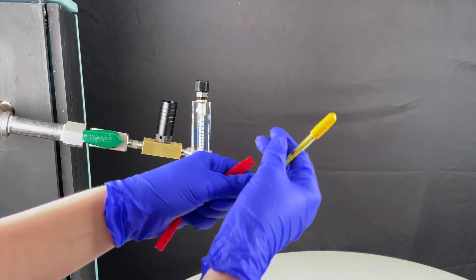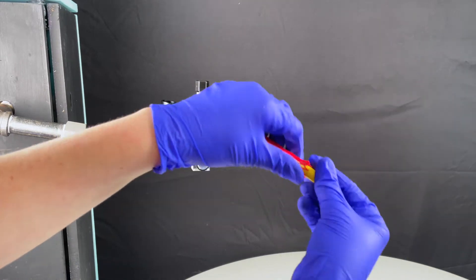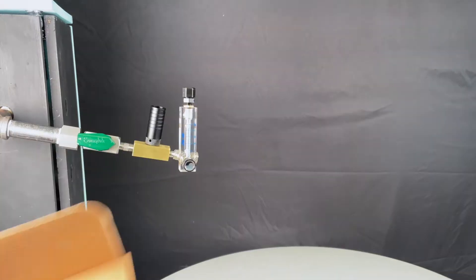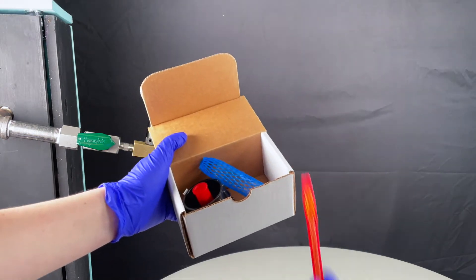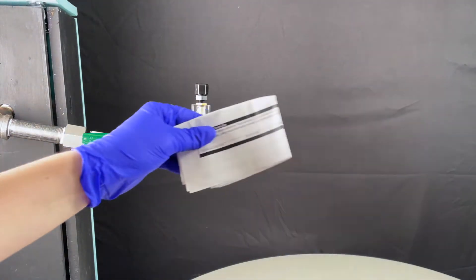Replace the netting on the source bottle and detector tube to avoid breakage during transit. Then place your 47 millimeter filter, source bottle and detector tube in the sampling media box with your completed data sheet.